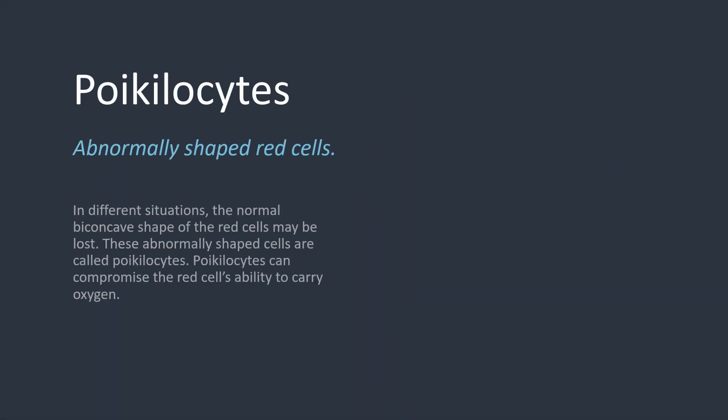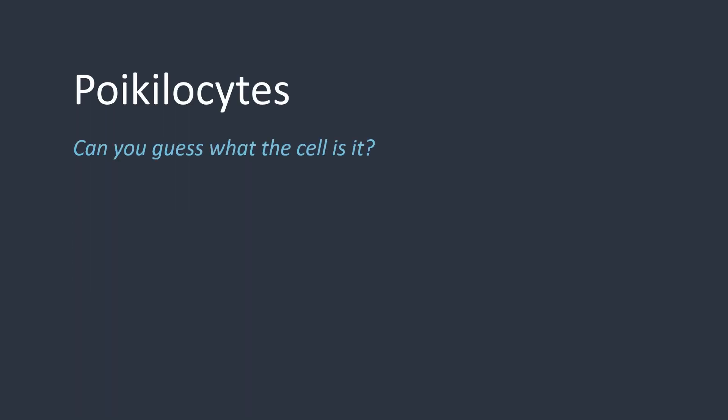When red cells lose their biconcave shape due to pathological conditions or artifactual in-vitro phenomena, they are described as poikilocytes. Poikilocytes can come in a whole range of different shapes. We'll go into more detail about them in a different video. You'll have a short while to guess what each one is before the answer is displayed — if there are any which aren't shown in the images, feel free to mention that in the comments below.